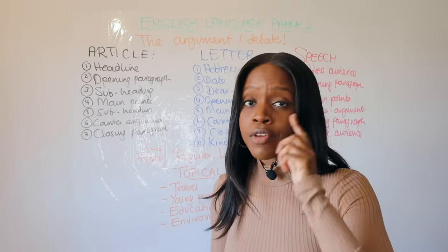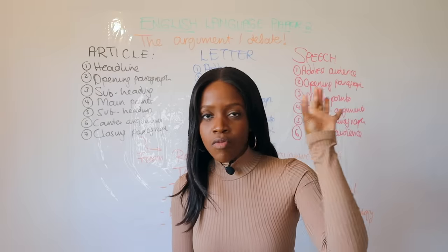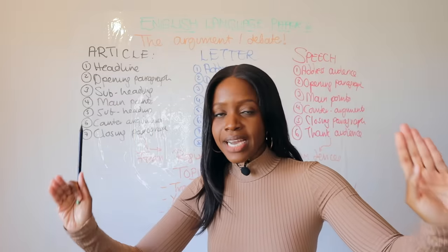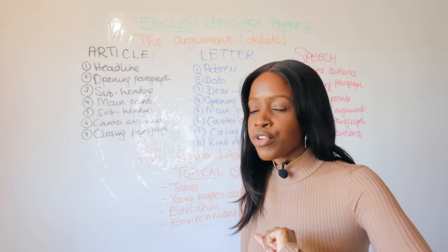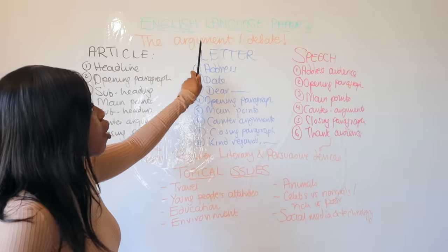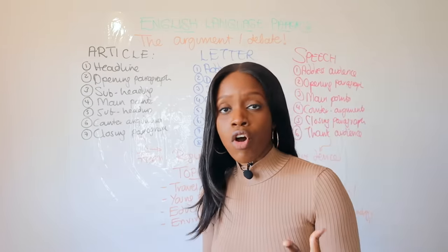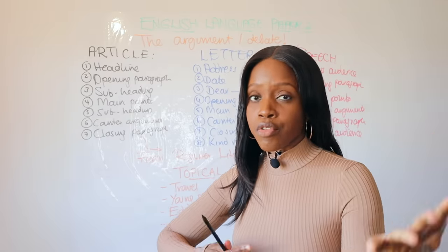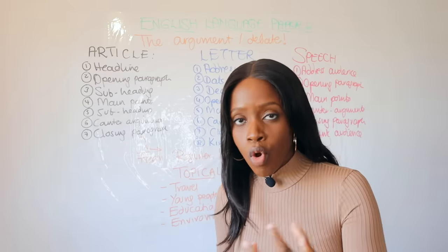An article starts off with a headline at the top, which hints at what the article is about and tends to be short — five words maximum. The best way to write a good headline is to take the key words from the statement you're given and turn it into a rhetorical question. That's step one. Step two is your opening paragraph, where you set out your line of argument — whether you agree, disagree, or agree to an extent — making it really clear what perspective you're going to argue for.